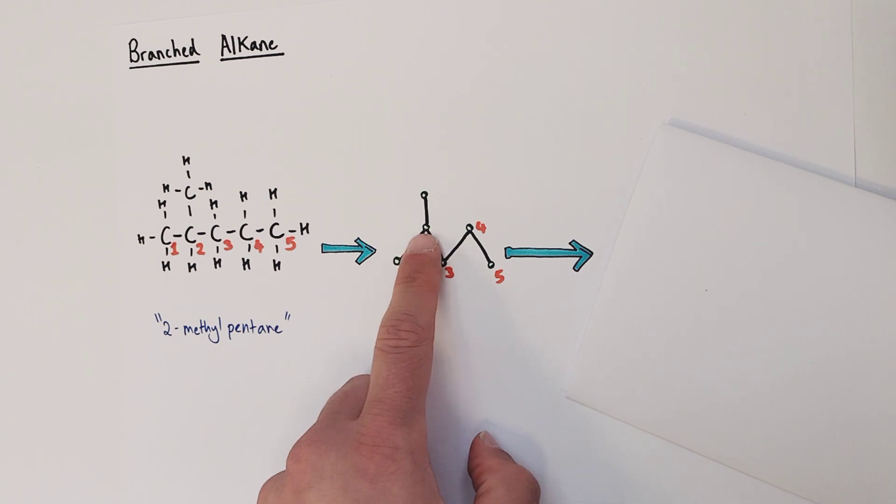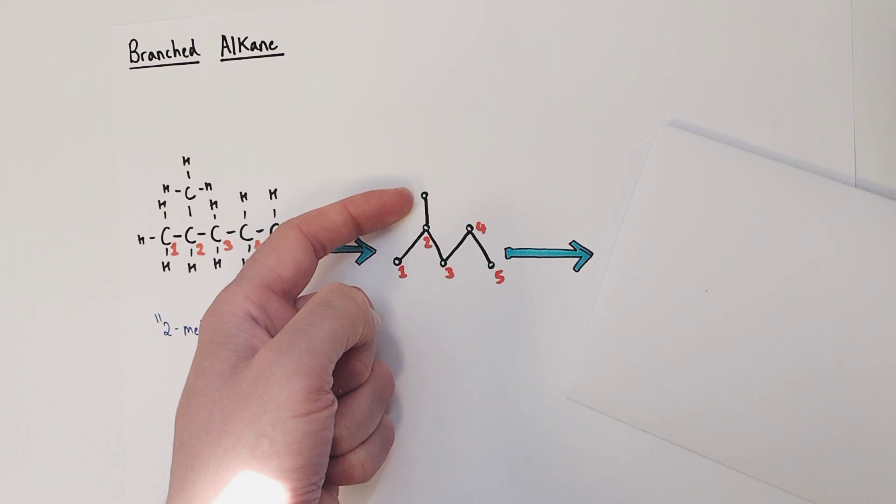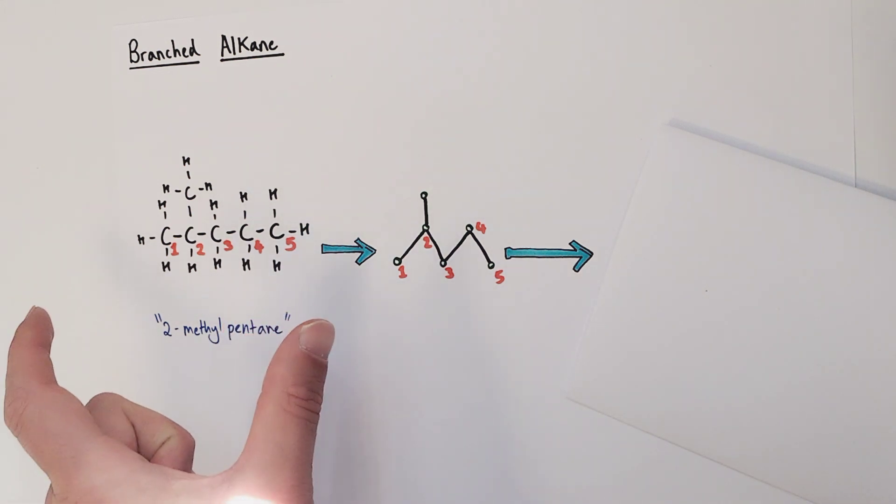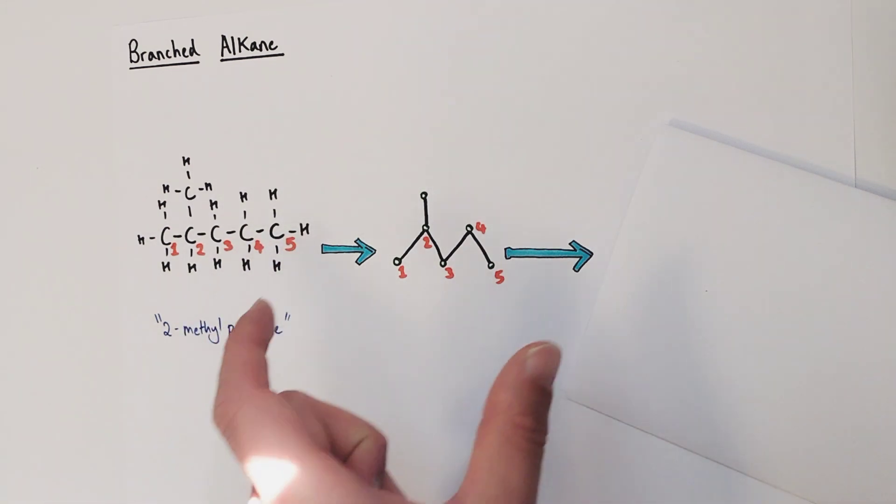So really easy to count along this chain and count the number of carbons present in this alkane molecule. One, two, three, four, five, with one branching carbon off of the second carbon position. So this is translating 2-methylpentane from a displayed formula to a much more simplified streamlined version.